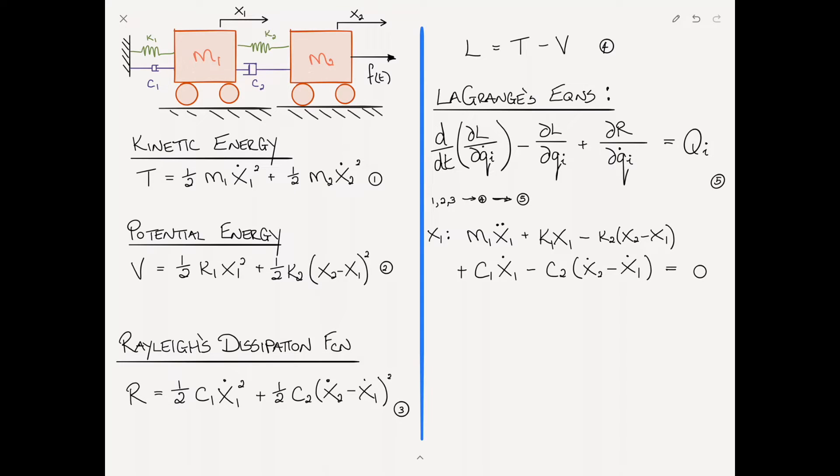Rewriting: m1 x1 double dot plus c1 plus c2 times x1 dot minus c2 x2 dot plus k1 plus k2 times x1 minus k2 x2 equals zero. We'll call that equation 6, the first equation of motion.